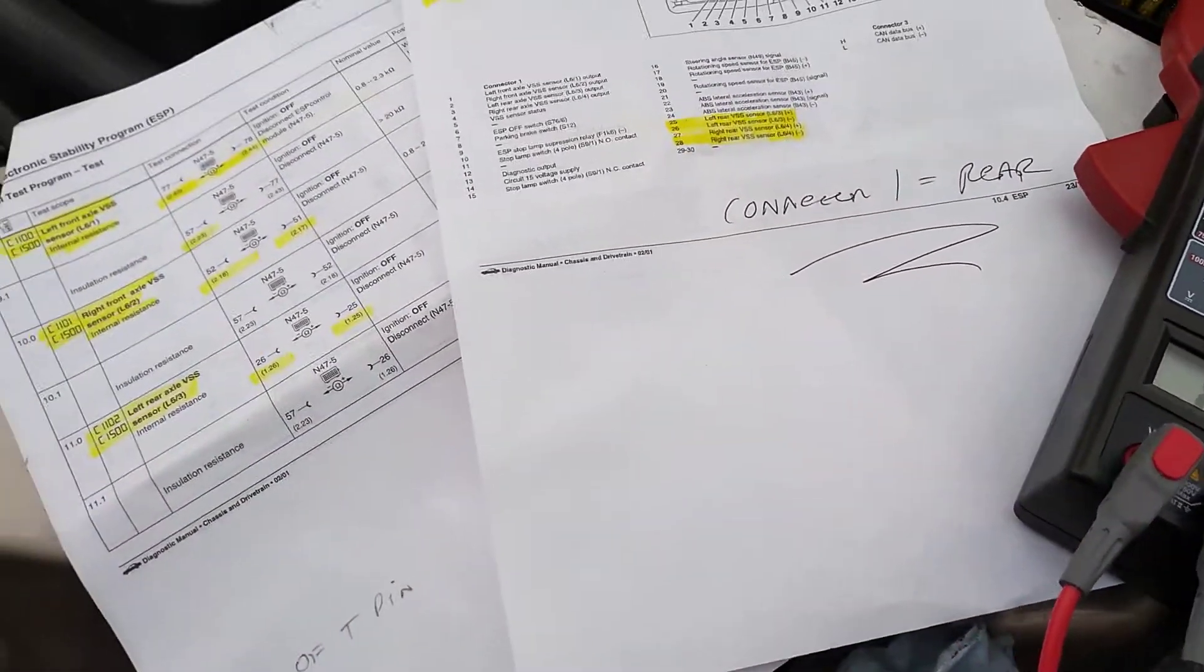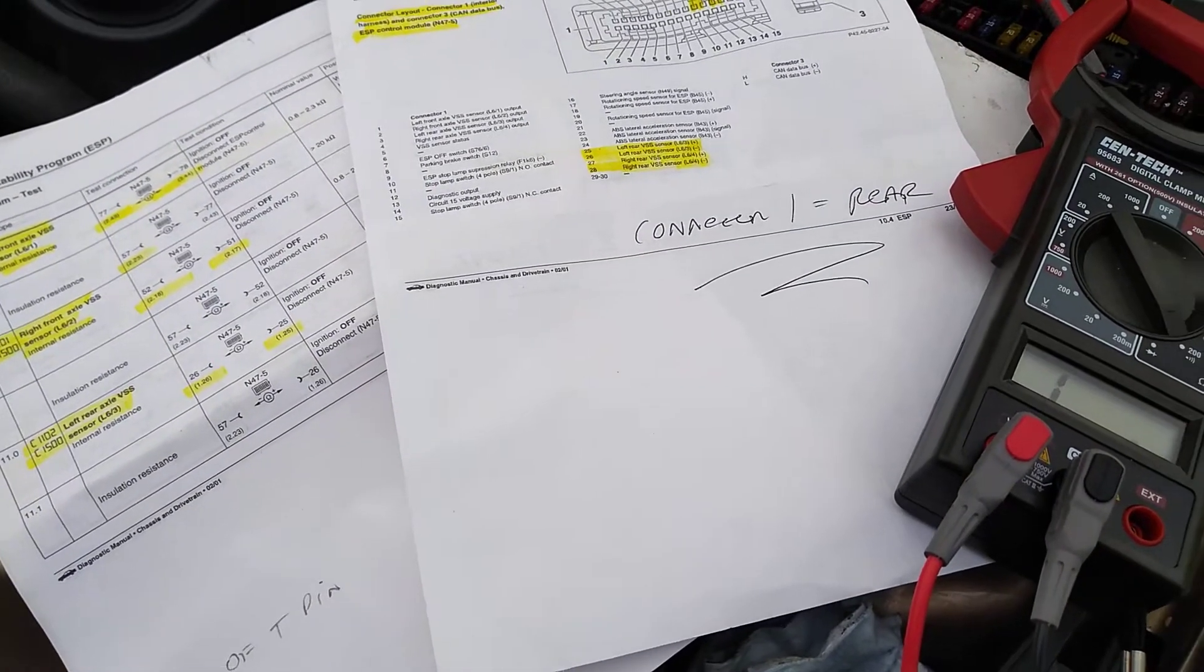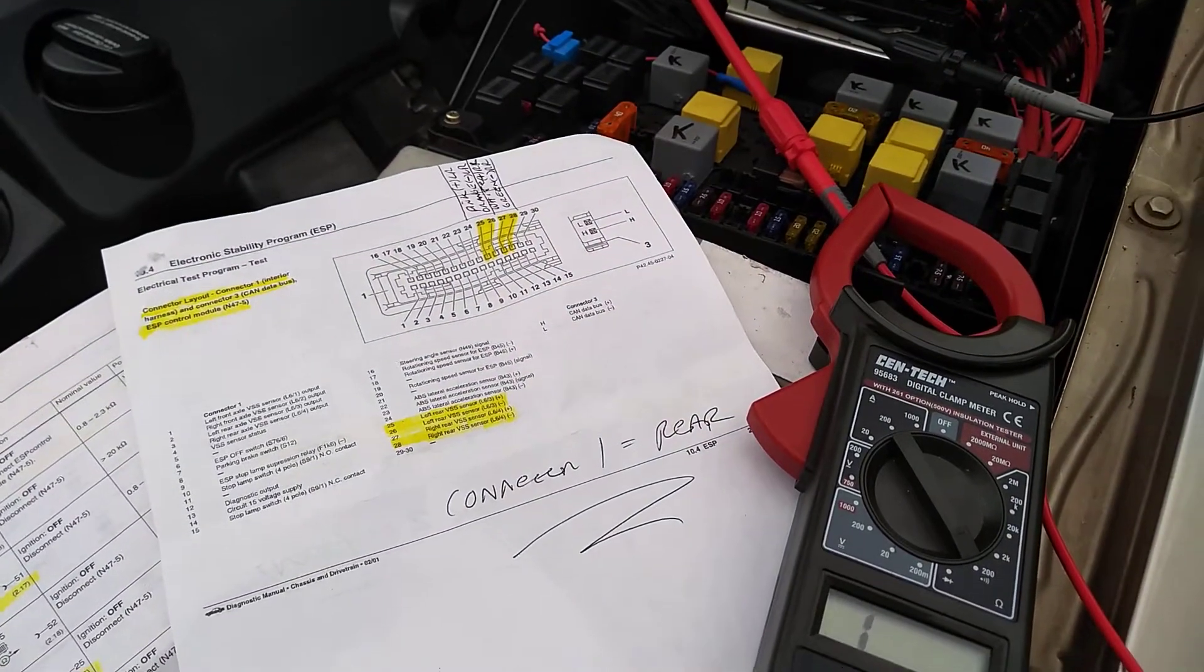Trying to read the wheel speed sensor values, checking the ohms to see if the sensors read good from the connector end. And here's what I'm seeing.